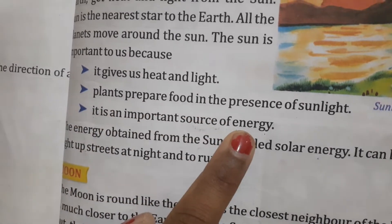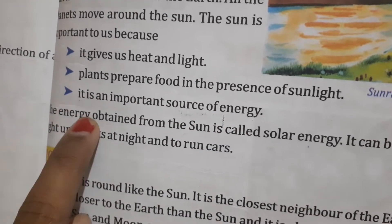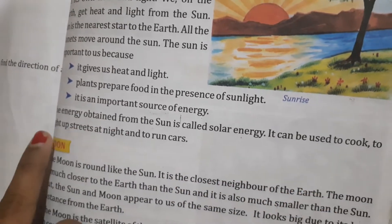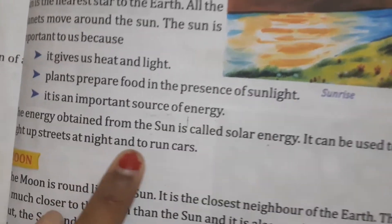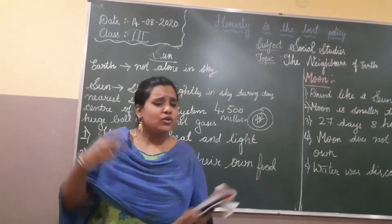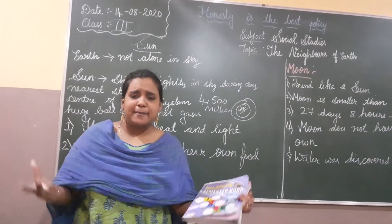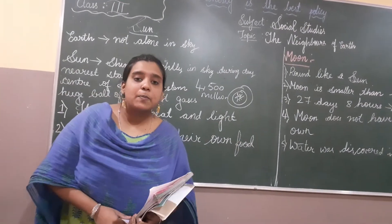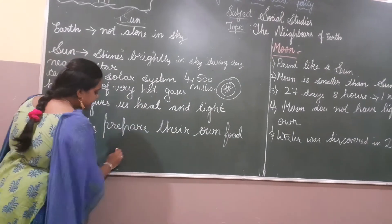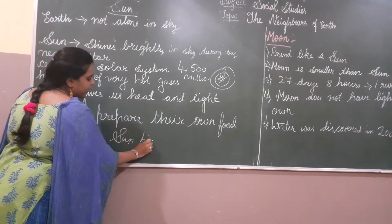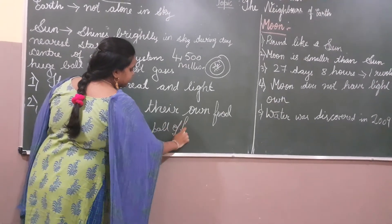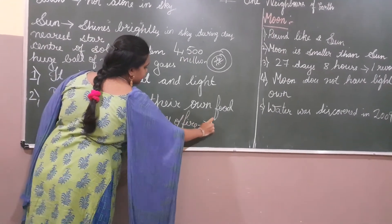Plants prepare food in the presence of sunlight — it is an important source of energy. The energy obtained from the sun is called solar energy. It can be used to cook food, light streets, and power cars. The sun is a huge ball of fire made up of gases, one such gas being helium.